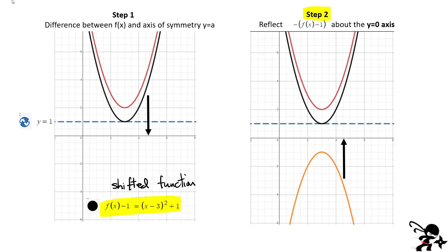For step 2, we take the black curve and reflect it about the y equals zero line. We're basically flipping this. To reflect about y equals zero, we just did an example — it's really straightforward: we start with our function f of x minus 1 and put a negative sign in front of the entire thing. The orange curve's equation is then negative of x minus 3 squared plus 1, which after multiplying through by minus 1 gives us negative x minus 3 squared minus 1. This is the new reflected orange curve.